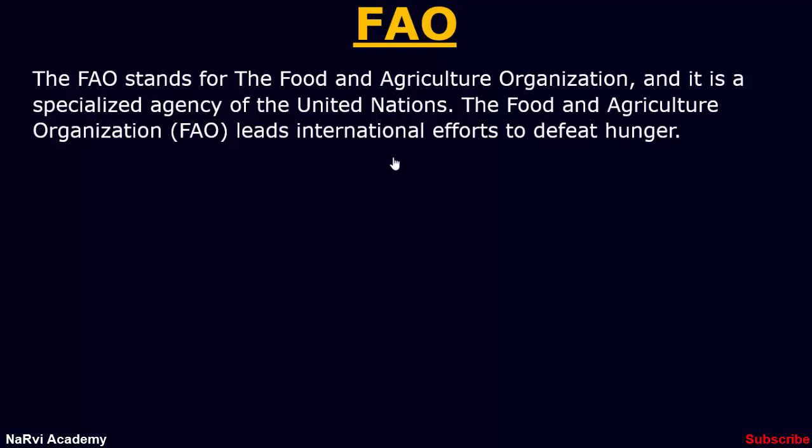The Food and Agriculture Organization leads international efforts to defeat hunger. The FAO also helps governments and private agencies to coordinate their activities to improve and develop agriculture, forestry, fisheries and land and water resources. The FAO also conducts research, provides technical assistance to projects, operates educational and training programs, and collects data on agricultural output, production and development.